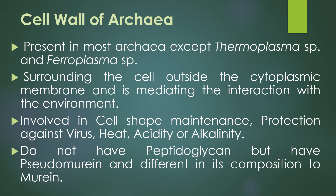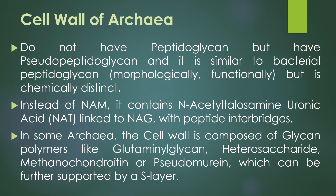The archaea cell wall can be involved in various functions like cell shape maintenance and protection against viruses, heat, acidity, or alkalinity. Archaea do not have peptidoglycan, but they have a substance called pseudomurein, which is different in composition from murein. Archaea have pseudopeptidoglycan, which is similar to bacterial peptidoglycan morphologically and functionally, but distinct in chemical composition.